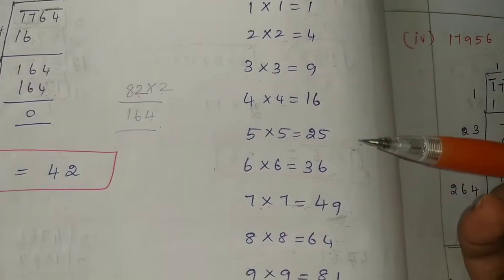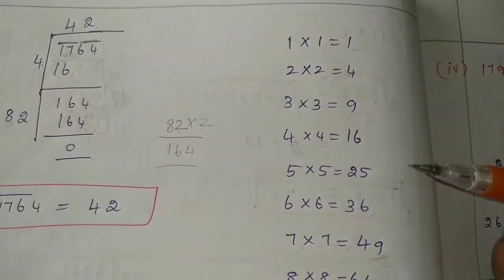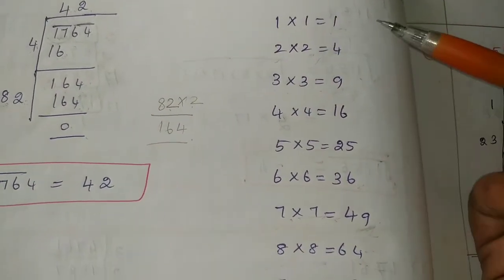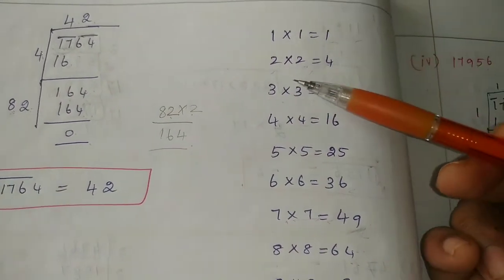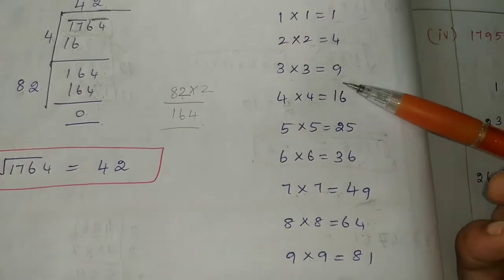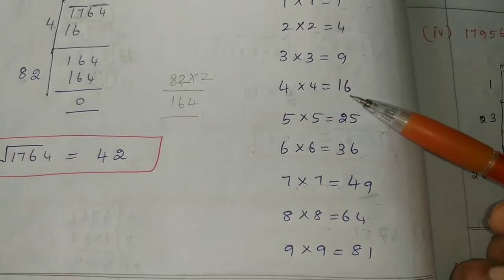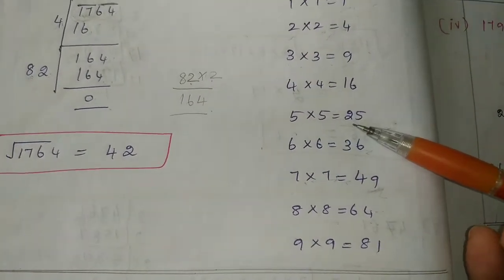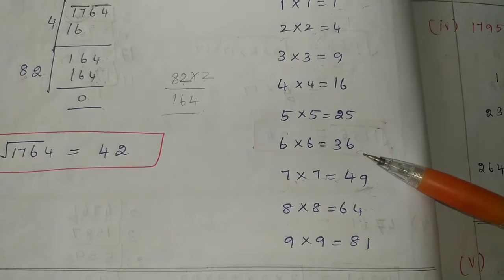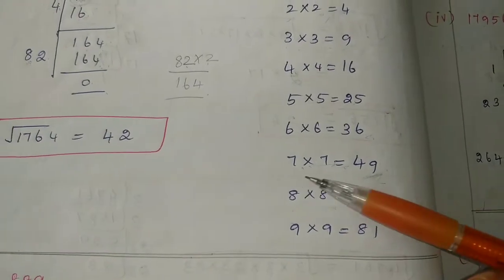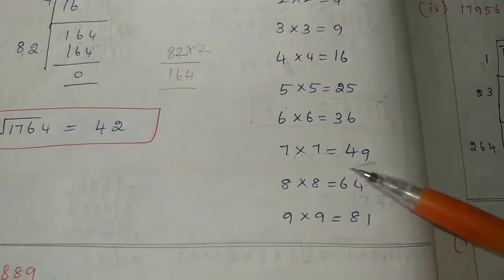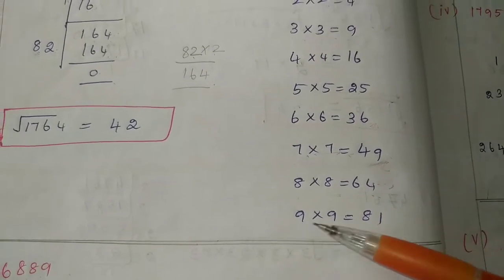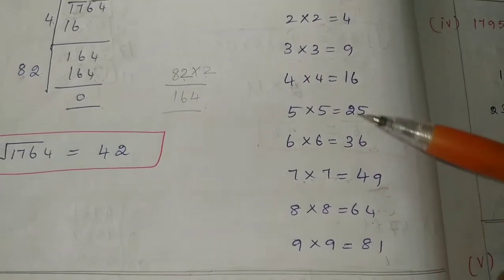We will see the square numbers. 1 1s are 1, 2 2s are 4, 3 3s are 9, 4 4s are 16, 5 5s are 25, 6 6s are 36, 7 7s are 49, 8 8s are 64, 9 9s are 81.